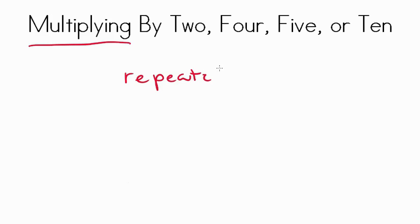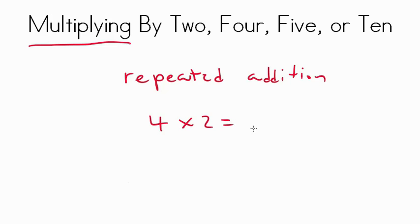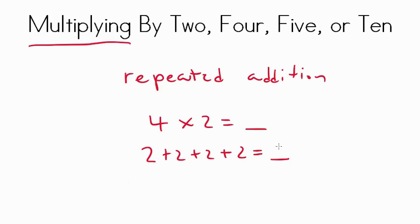Repeated addition means just doing something over and over exactly the same. So for instance, if we had the numbers 4 times 2, what that's really saying is 2 plus 2 plus 2 plus 2. And if we skip count along, we can go 2, 4, 6, 8. So our answer, if we added it, is 8. If we multiplied it — 4 groups of 2 — the answer is also 8.